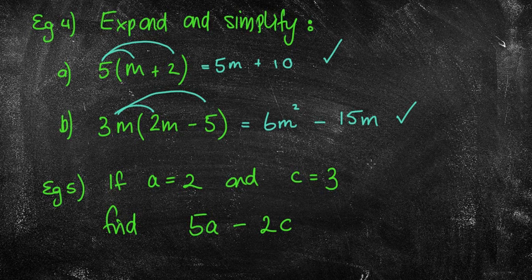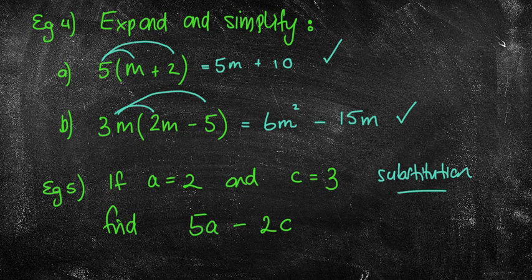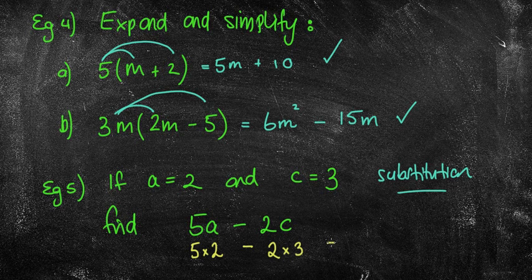Next is substitution, where we replace the letter with a number. For 5a minus 2c where a equals 2 and c equals 3: 5a means 5 times 2, and 2c means 2 times 3. That gives us 10 take away 6, which equals 4.